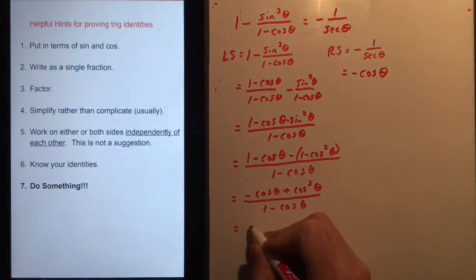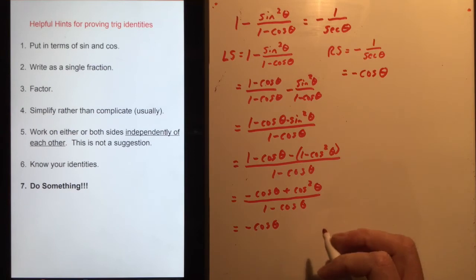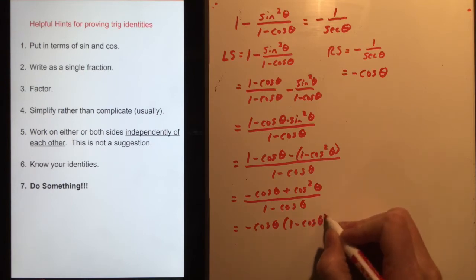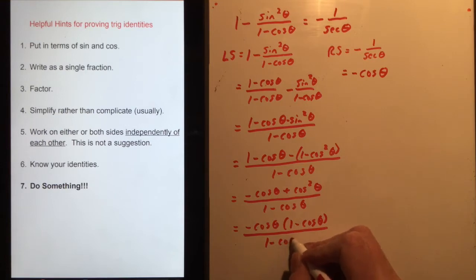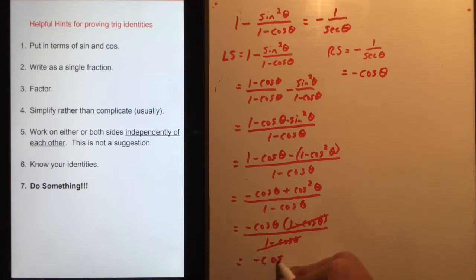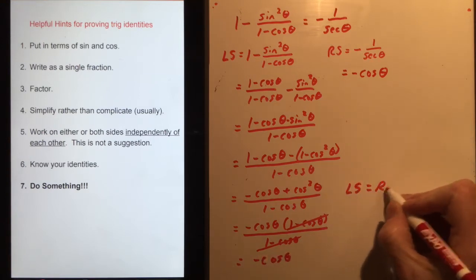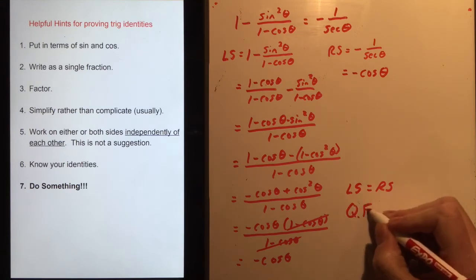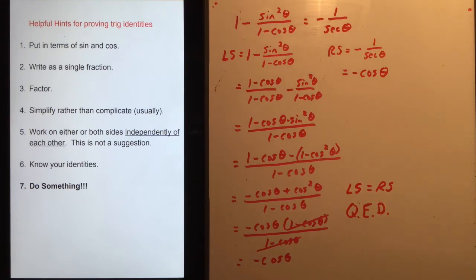I'll factor a negative cosine theta out of the numerator, giving -cosθ(1 - cosθ) over (1 - cosθ). The (1 - cosθ) terms cancel, and I'm left with -cosθ — which is exactly what the right side says. So left side equals right side. We write QED, which stands for 'quod erat demonstrandum' — Latin for... something about being done. I've seen a lot of smart people use it at the end of proofs, so that's what we'll do.